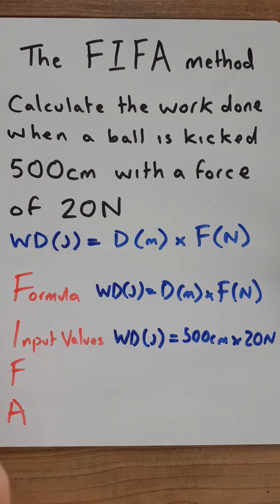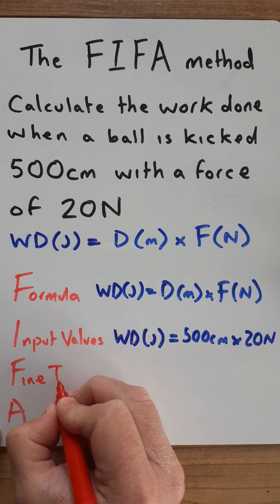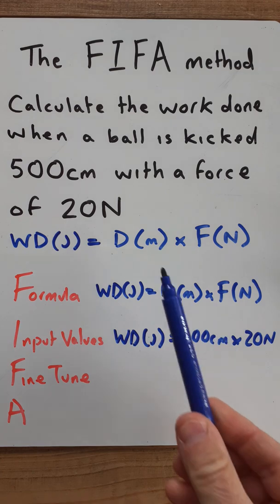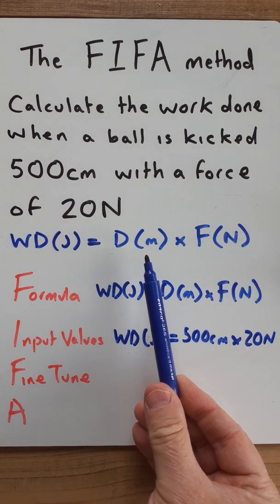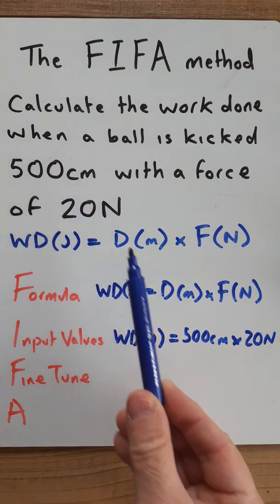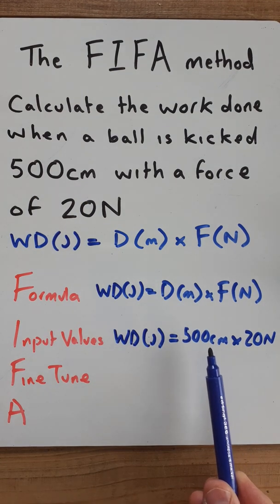The next F stands for fine tune and what that means is at this point you might need to change the subject of the equation or you may need to convert some of the units. Well in this question I do need to convert some of the units. Distance has to be in meters and in the question it's given to me in centimeters and you can see that we wrote centimeters down here.